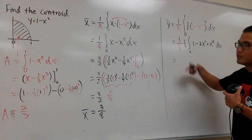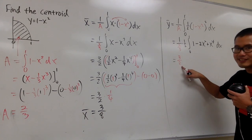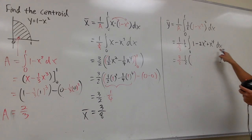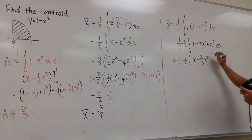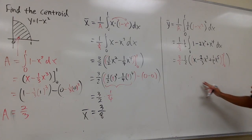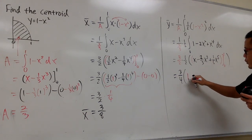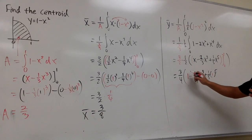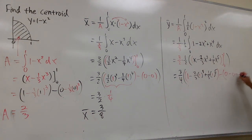So 1 over 2 thirds is 3 halves, and multiply by 1 half to get 3 over 4. Now integrate: integral of 1 is x, integral of minus 2x squared is minus 2 thirds x to the third, and plus 1 fifth x to the fifth. Plug in 1: 1 minus 2 thirds times 1 to the third plus 1 fifth times 1 to the fifth. Plugging in 0 gives all zeros, so we subtract 0.